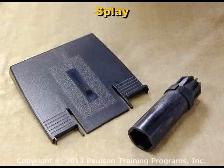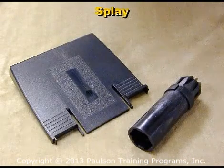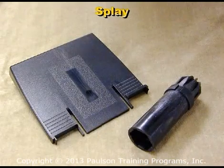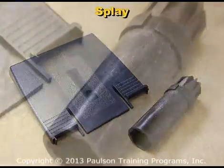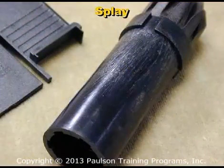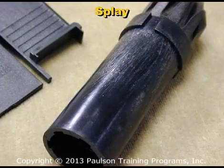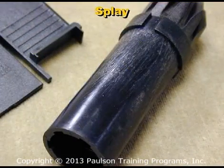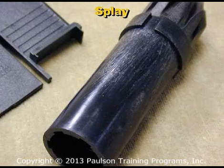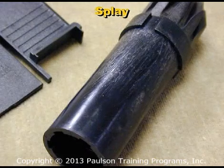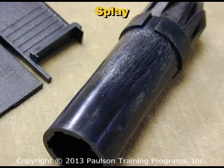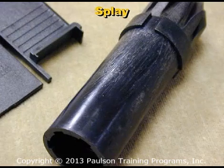These are parts that have a defect called splay. Splay, sometimes called silver streaks, is an appearance defect. It looks like streaks or scratches on the surface of the part.